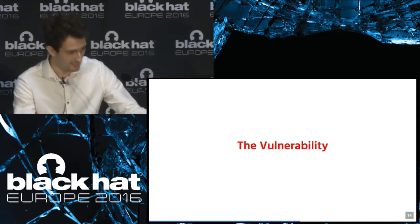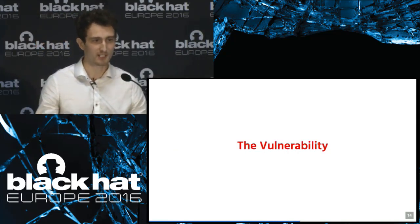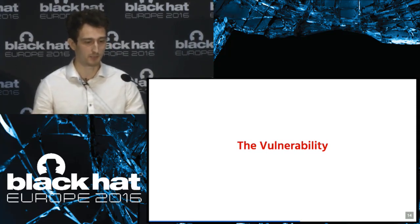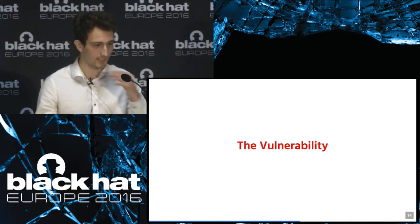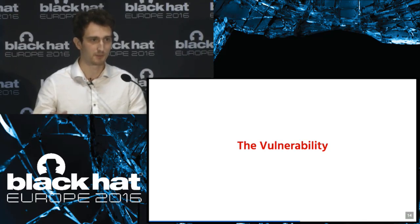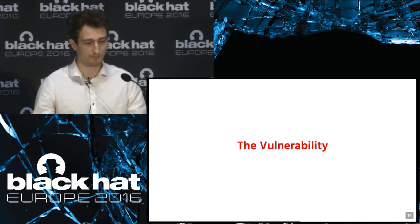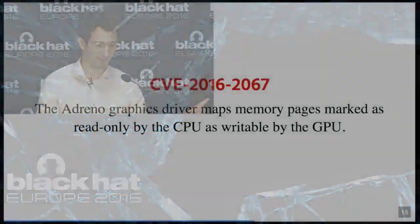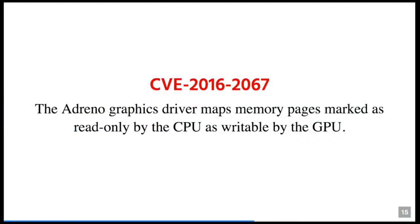Let's talk about the vulnerability now. We talked about shared memory and how to set that up, and how we could write from the command processor into GPU memory. The actual vulnerability — which I received a CVE for — is that the Adreno graphics driver maps memory pages marked as read-only by the CPU as writable by the GPU. This is huge and has a lot of repercussions.